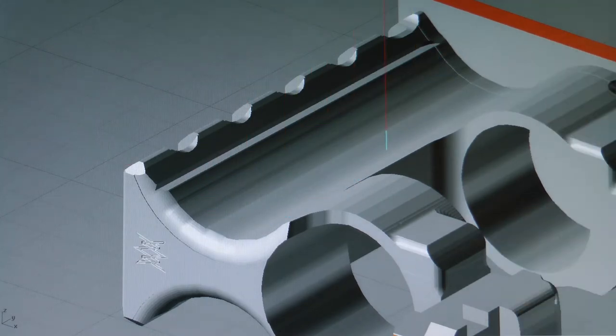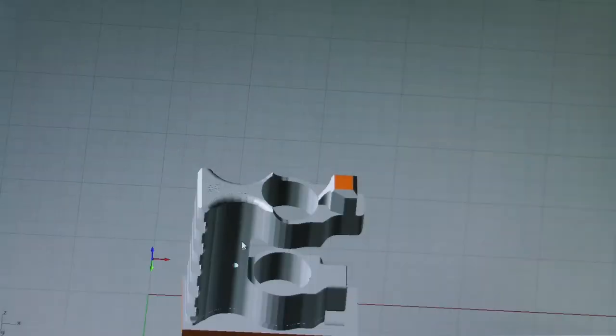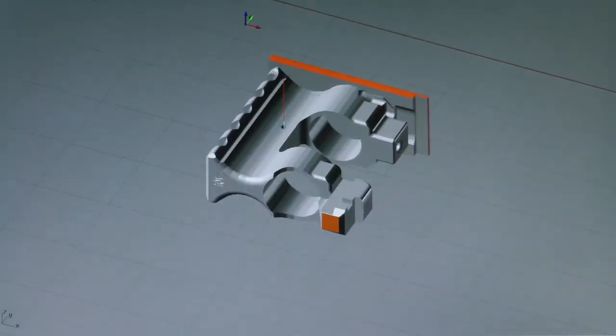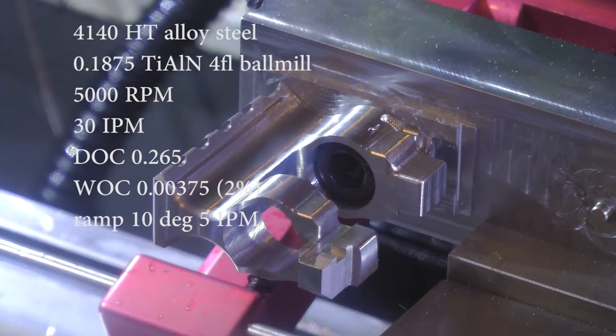So then I go through and do the gas block spotting and drilling for the gas tube roll pin, which secures the gas tube. So here we go, this is a standard 4-flute ball mill.